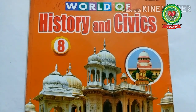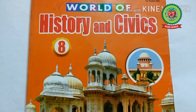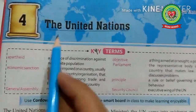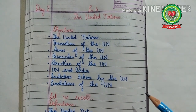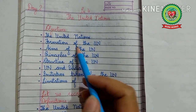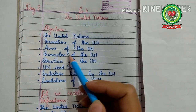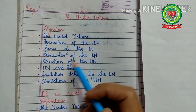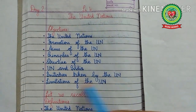Hello everyone, open your History and Civics book, Class 8, Lesson 4: The United Nations. Earlier we had discussed what is the United Nations, the formation of the UN, aims of the UN, and the principles of the UN. Today we are going to discuss the initiatives taken by the UN and the limitations of the UN.